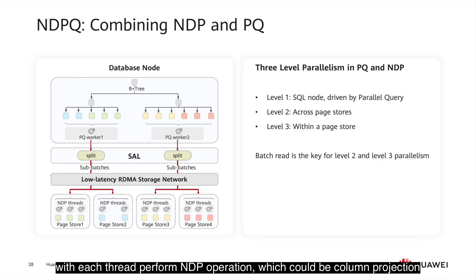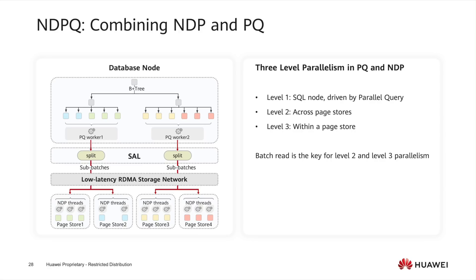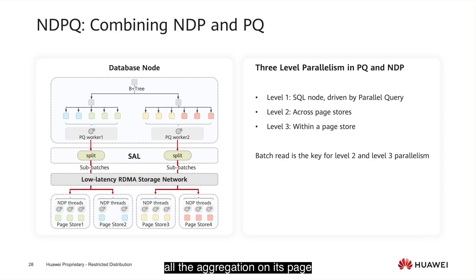The page store can use multiple concurrent threads to perform the NDP operations, with each thread performing NDP operations which could be column projection, predicate evaluation, or aggregation on its pages in the batch.